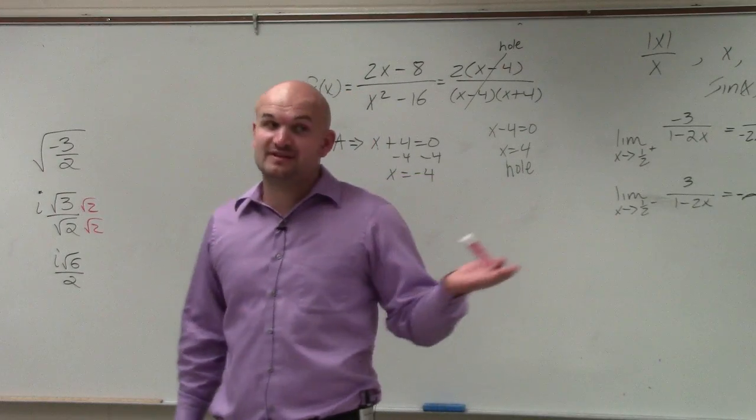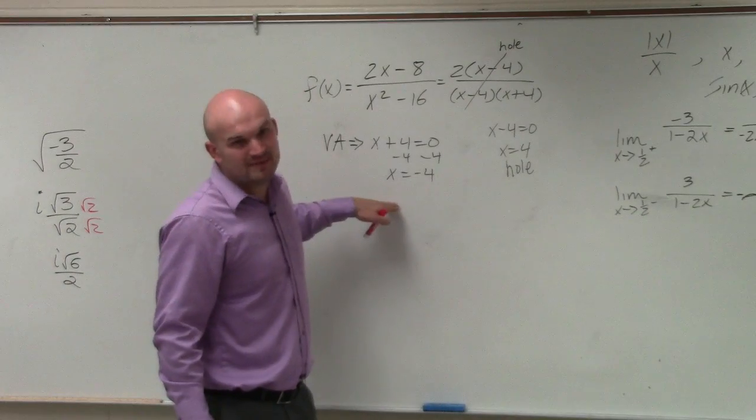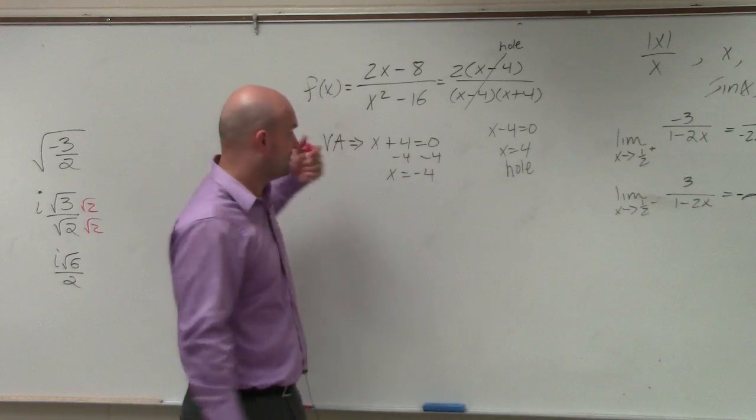So based on the question, if I said what's all the discontinuities, you'd say it's 4 and negative 4, but that's a hole and that's an asymptote. I'm just asking for the asymptote, so that's why I like this problem, because it gives you a hole, like your homework or like the work that we did.